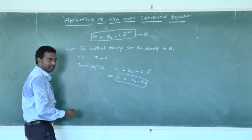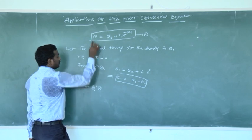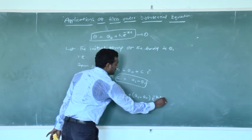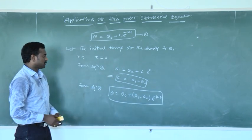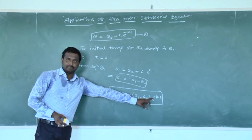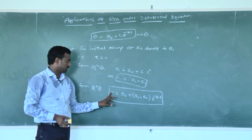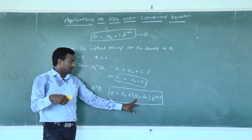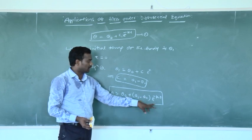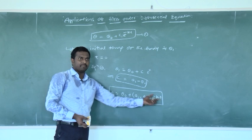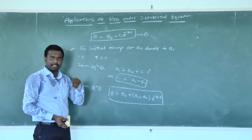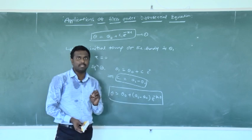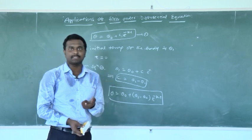Substituting the value of c back into the equation, we get theta equals theta naught plus theta 1 minus theta naught into e power minus k t. This is the formula to find the temperature at any time. Here, theta is the temperature of the body, theta naught is the surrounding medium temperature, theta 1 is the initial temperature, and t is the time. If you know the time, you can find the temperature at that particular time, and if you know the temperature, you can find the time. This is a very useful application of ordinary differential equations in engineering and physical sciences.